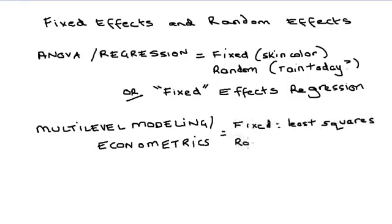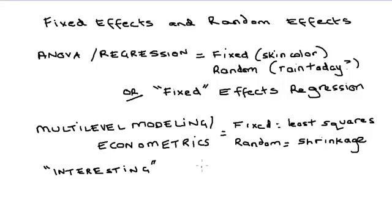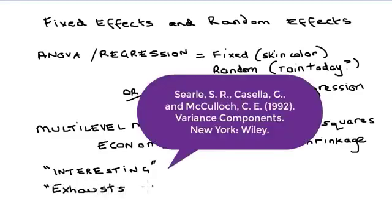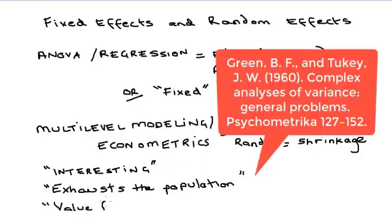There are a few other less common definitions. Searle, Casella, and McCulloch defined fixed variable as interesting. Green and Tukey in their 1960 book defined a fixed variable as one that exhausts the population. And Lamotte defined it as an effect is assumed to be a realized value of a random variable, it's called a random effect.